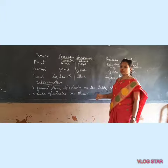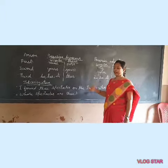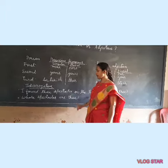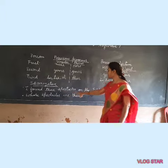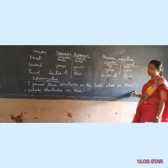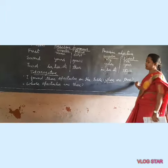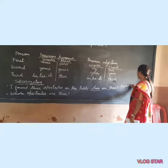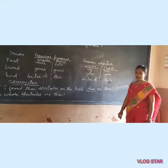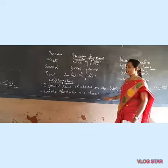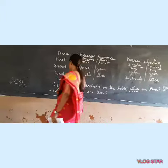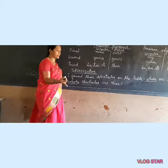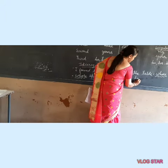I have written two sentences here. The first: 'I found these spectacles on the table. Whose are these?' And the second: 'Whose spectacles are these?' In 'whose spectacles are these', the spectacles are being described by 'whose' — so here 'whose' functions as a noun plus adjective.